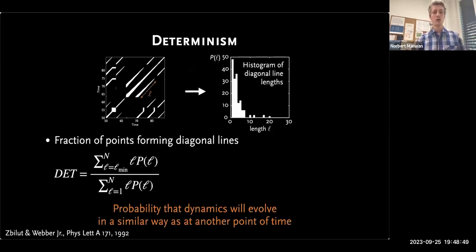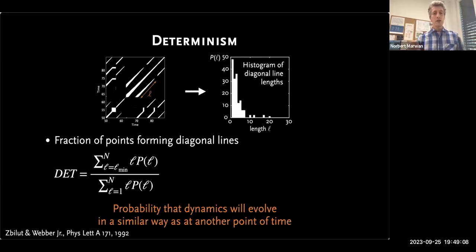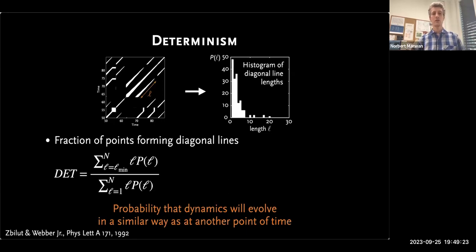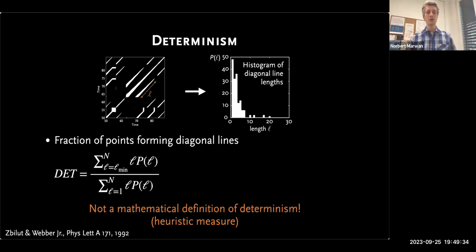This is the first measure introduced by Zbilut and Webber in 1992. They simply counted the points in the recurrence plot that form diagonal lines, or counted the distribution of diagonal line lengths as a histogram. From this we can calculate the fraction of points forming diagonal lines — so-called determinism or percentage determinism. When it is 1, we have only diagonal lines; if it is 0, we have only single points. This is a nice way to qualitatively interpret the dynamics with a quantifier. We should be careful: this is not a mathematical definition of determinism, but more a heuristic measure giving an indication whether the system might be deterministic. It can also be interpreted in terms of predictability.